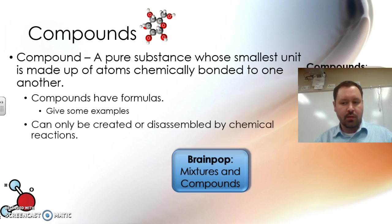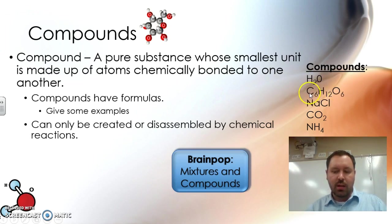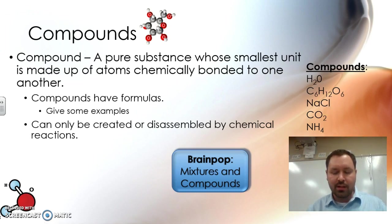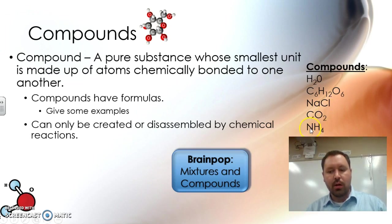Compounds have chemical formulas. Here are some examples. Some compounds can be like H2O — that's two hydrogens and one oxygen. Or C6H12O6, which is a type of sugar. Or NaCl, which is sodium and chlorine chemically bonded. You can get sodium and chlorine in their pure forms and put them together and it's still a mixture, but only when you chemically combine them does it make a compound. Same thing with CO2 — only when carbon and oxygen are chemically bonded does it become a compound. Or ammonia, NH4 — it has to be chemically bonded to make a compound.